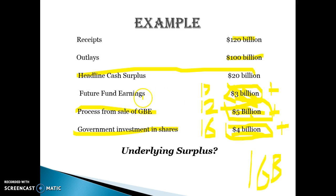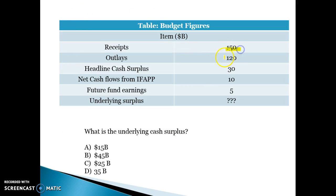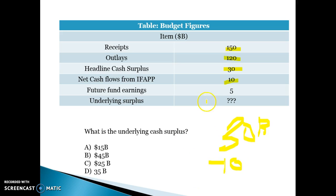Any money the government is earning gets deducted from the headline to get the underlying, and any payments by the government get added back. Here's another example: receipts $150 billion, outlays $120 billion, so the headline cash surplus was $30 billion. Net cash flows from investments (IFAPP) were $10 billion positive, so that needs to get deducted. It also includes $5 billion from future fund earnings, which is not available for current consumption, so that gets deducted as well. The underlying cash surplus becomes $15 billion.